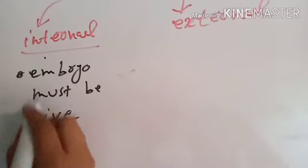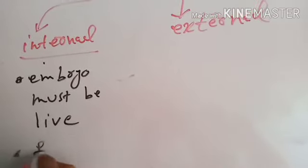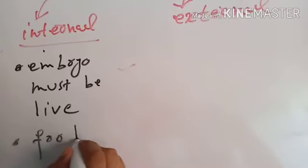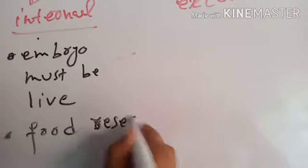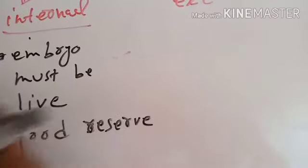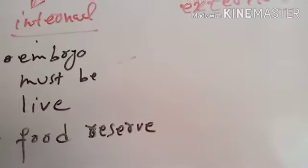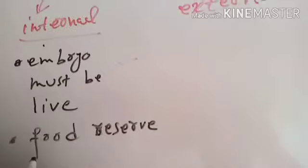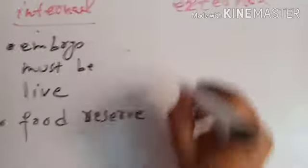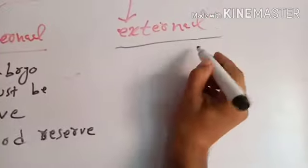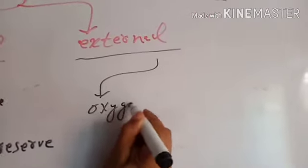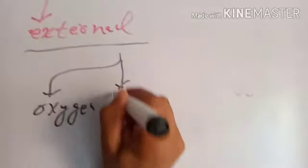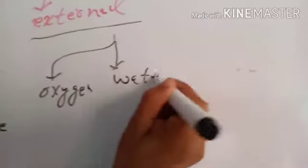The second internal condition is there must be some food reservoir, endosperm tissue, inside the seed so that the embryo during germination can use this food reserve. The external conditions include availability of oxygen, water, and favorable or optimum temperature.